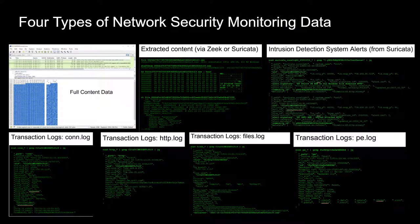Zeek provides certain types of network security monitoring data and then you can supplement it with other collection mechanisms. For example, full content data is one type of NSM data. Zeek does not provide it, but you can collect it with other means, whether it's simply using TCP dump or Marty Resch's daemon logger or whatever other tool you might be using. Extracted content refers to ripping files out of traffic, whether it's a portable executable file or the contents of a website or whatever it is. That is something Zeek can do, also something Suricata can do.